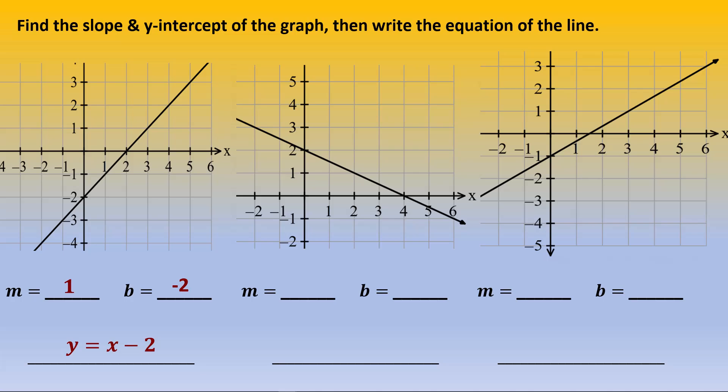For the second one, it is going down 1 and over 2 each time, passes through 2 on the y-intercept, and so the equation is y equals negative 1/2 x plus 2. For the third one, the slope is going up 2 and over 3 each time, and it passes through negative 1 on the y-axis. The equation is y equals 2/3 x minus 1.